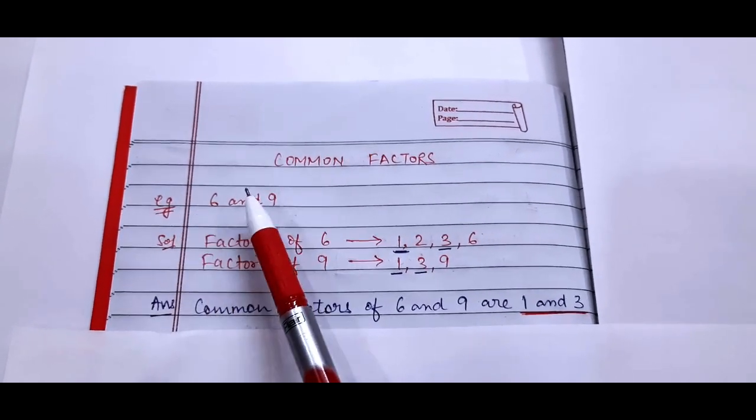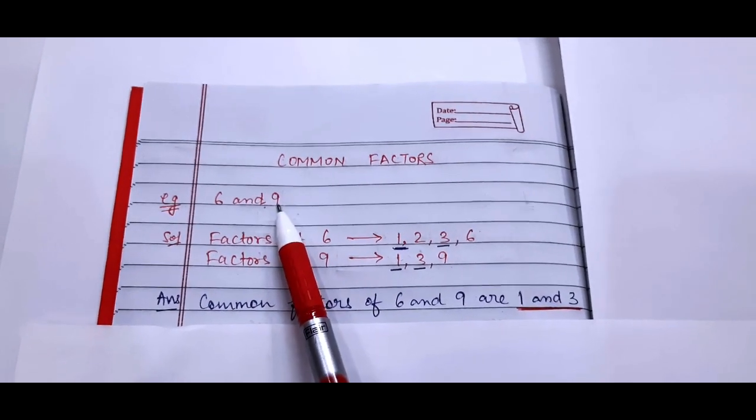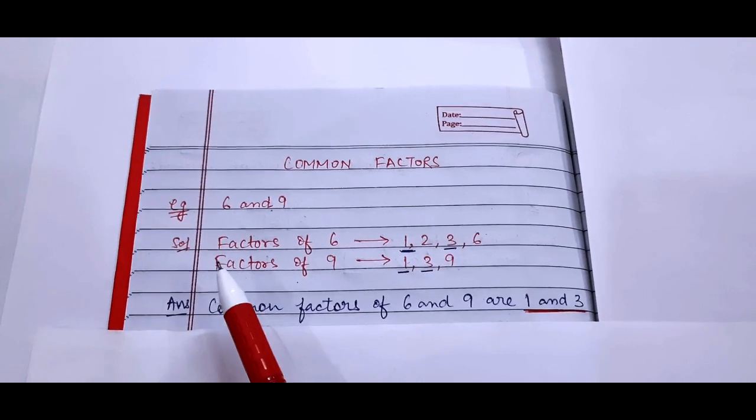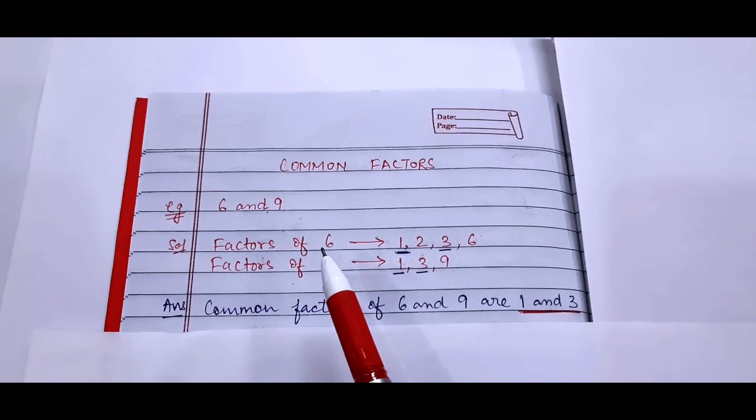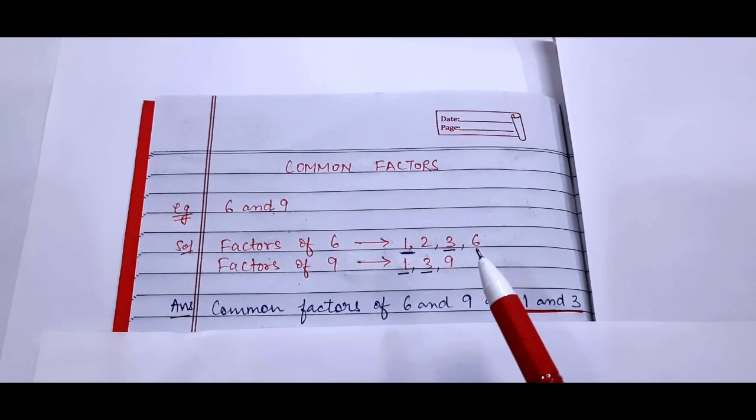In this example you have to find out the common factors of 6 and 9. So for this first we have to write the factors of 6, i.e. 1, 2, 3 and 6.